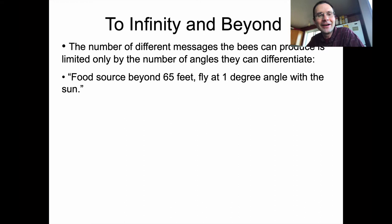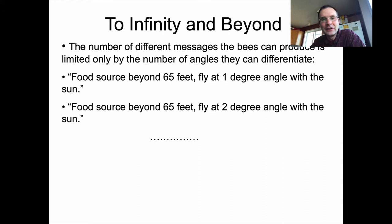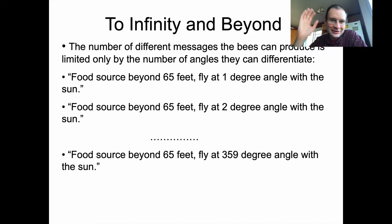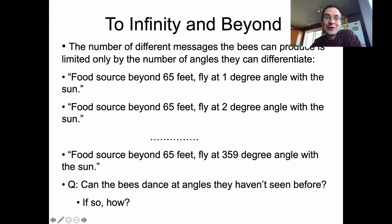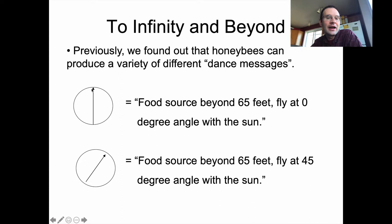There's maybe a limit on the number of messages bees can produce based on how many angles they can differentiate in their dancing. We can express degrees as numbers and get as specific as we want — fly at a one-degree angle, two-degree angle, or even finer. A clever student has raised the issue of how creative this is: can bees dance at angles they haven't seen before? If a bee has only seen two dances in its short life, can it figure out what a two-degree-angle dance means?